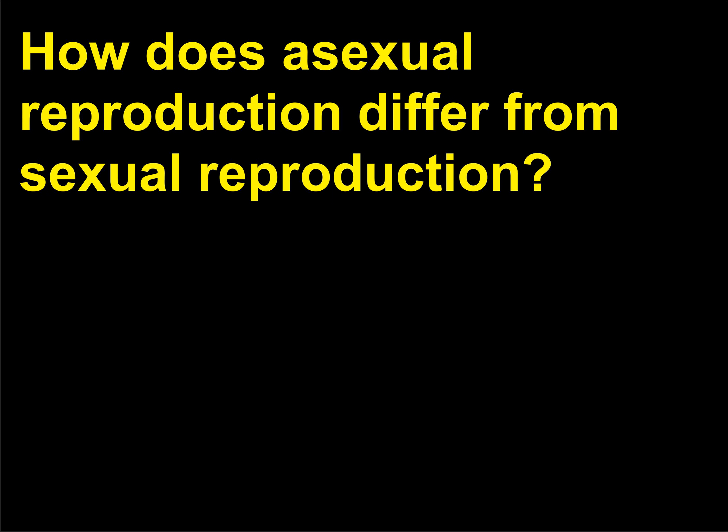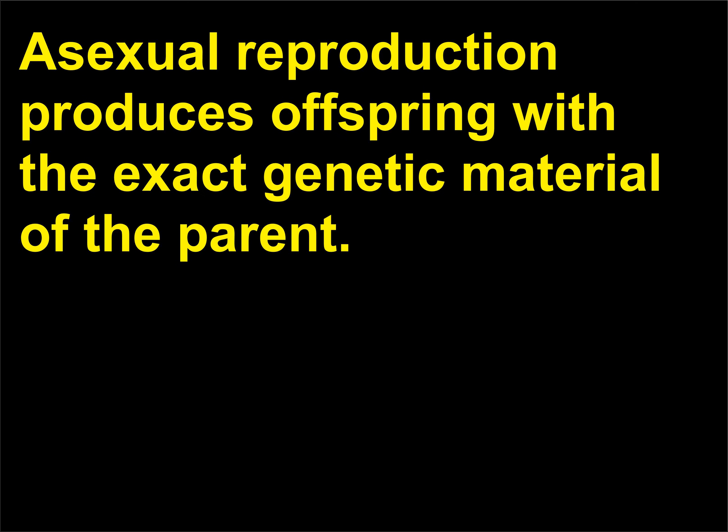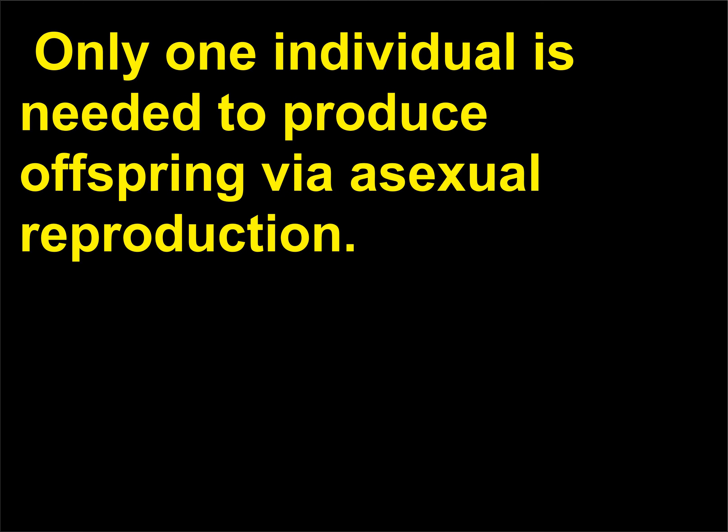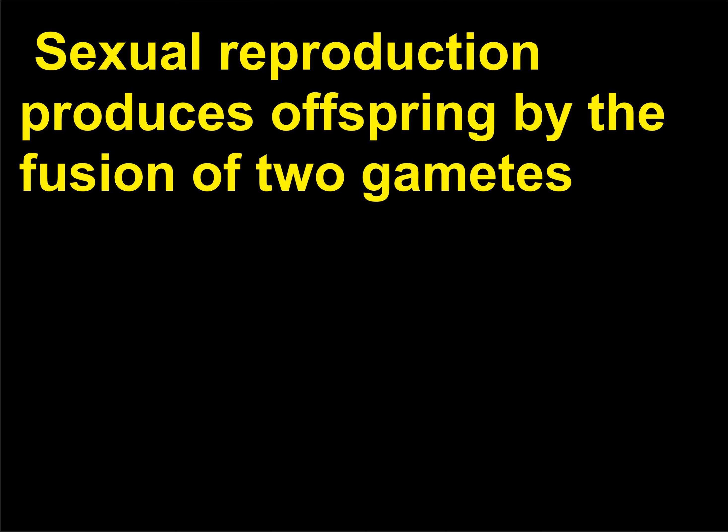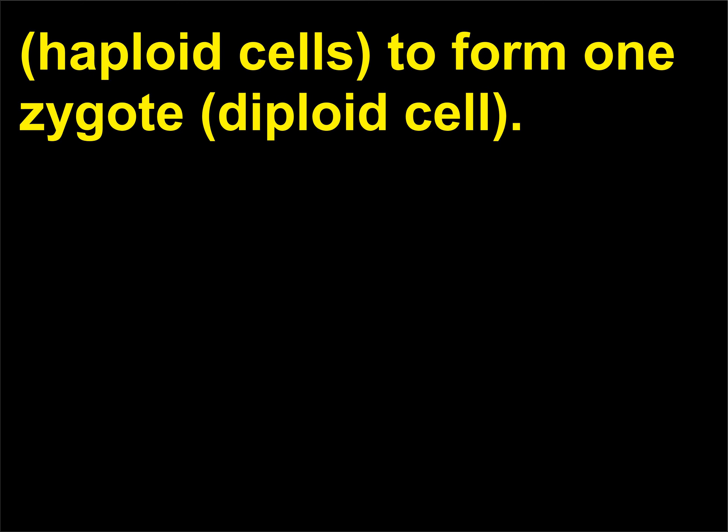How does asexual reproduction differ from sexual reproduction? Asexual reproduction produces offspring with the exact genetic material of the parent, and only one individual is needed. Sexual reproduction produces offspring by the fusion of two gametes — haploid cells — to form one zygote, a diploid cell.